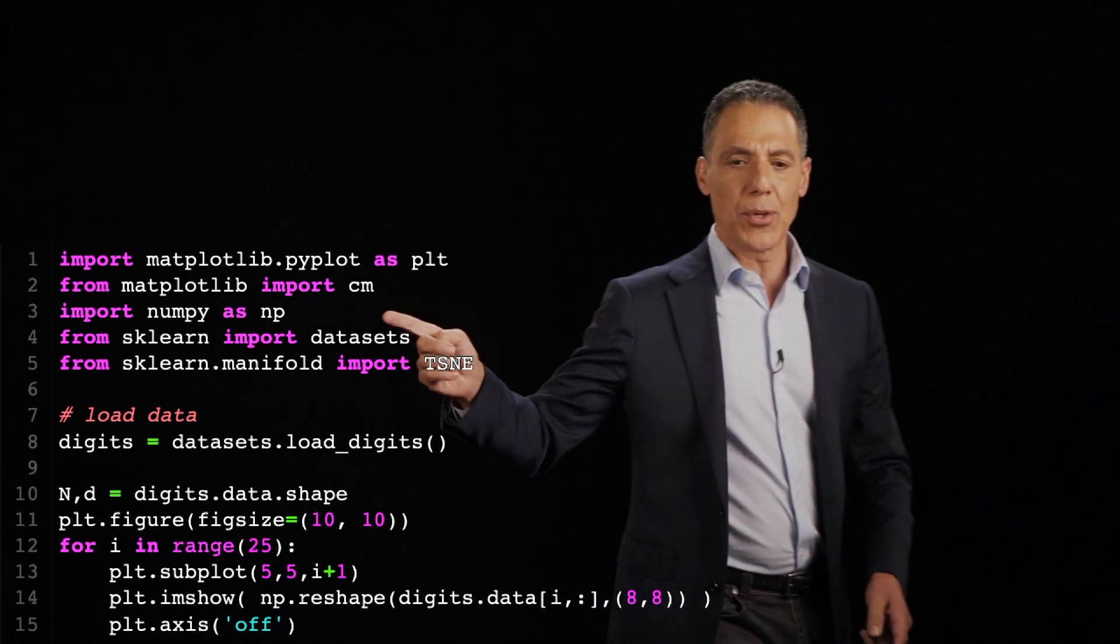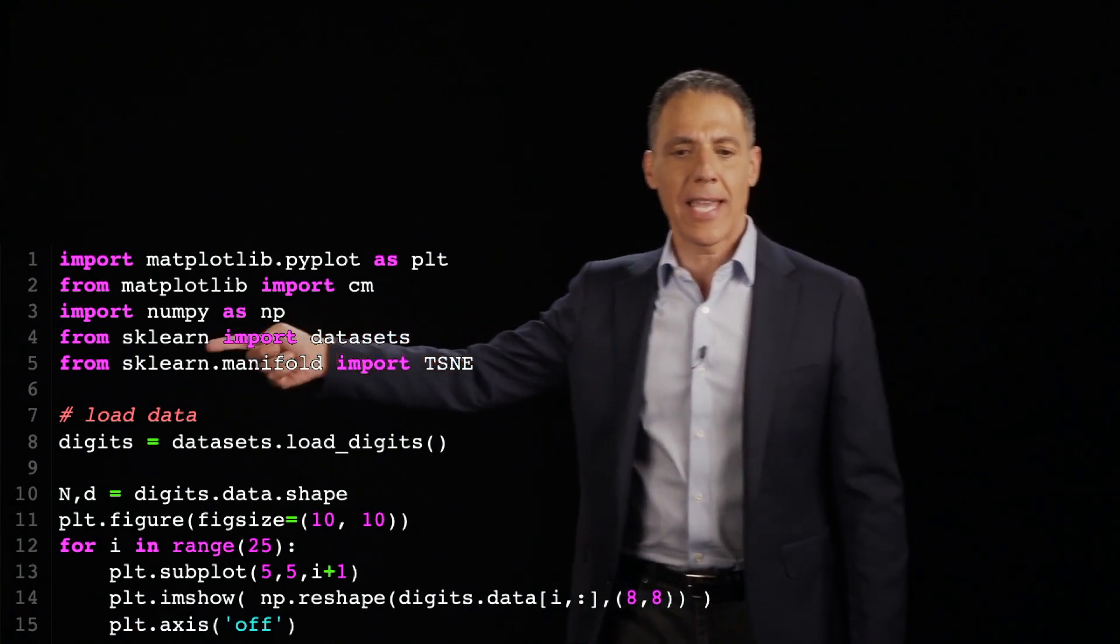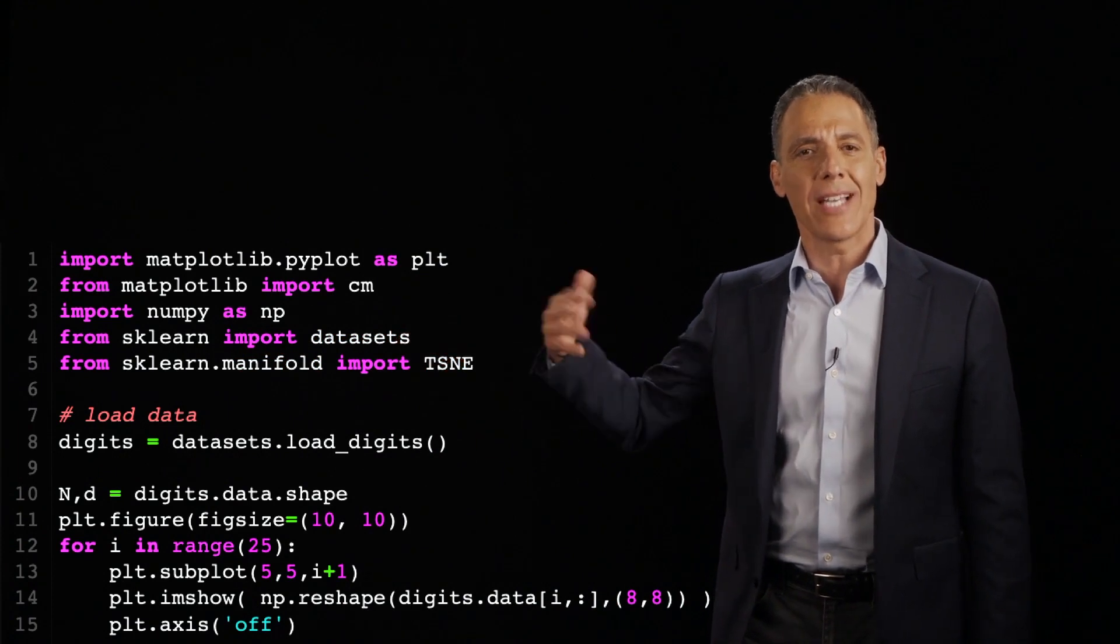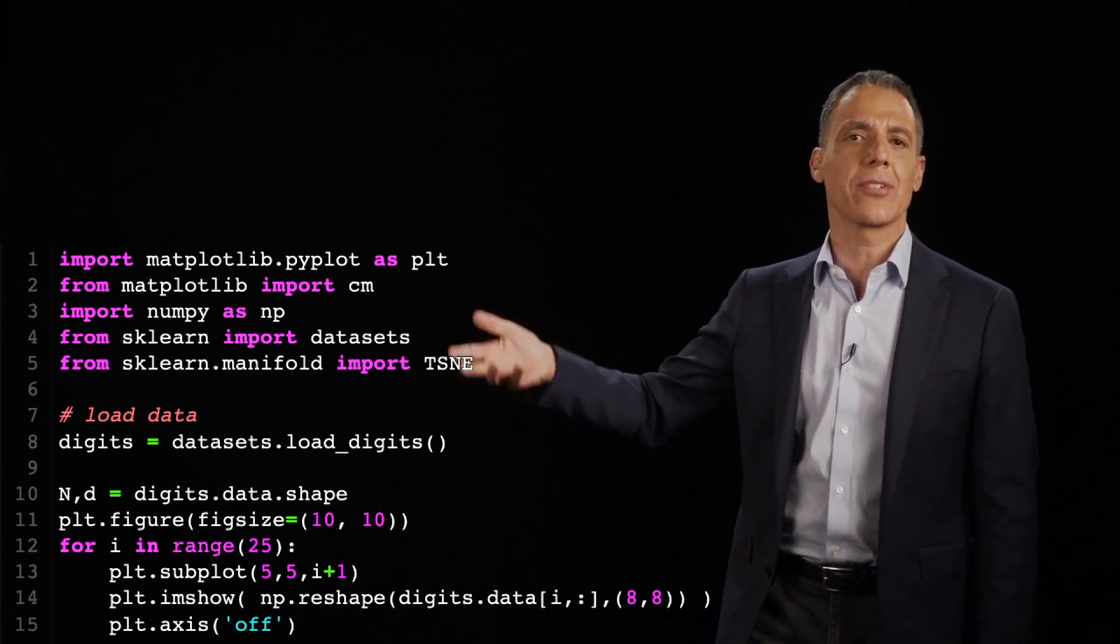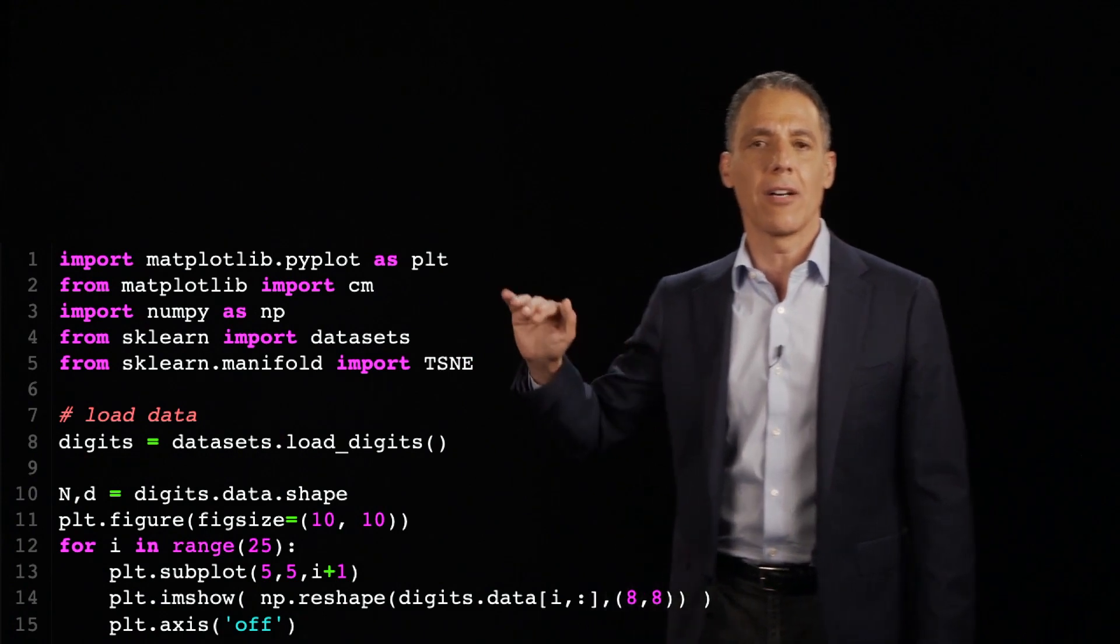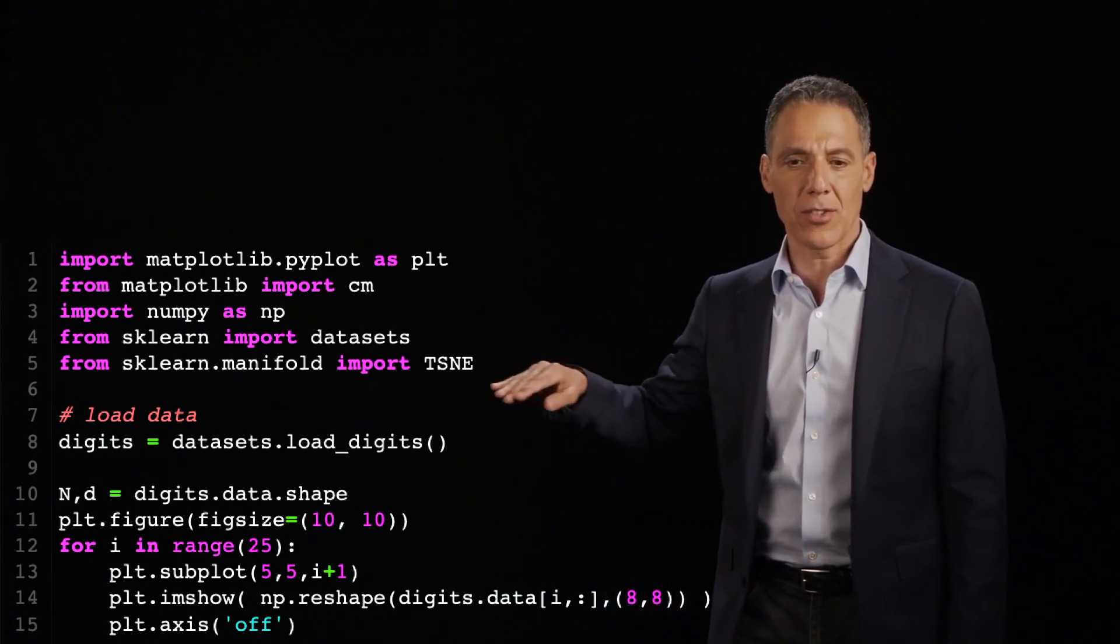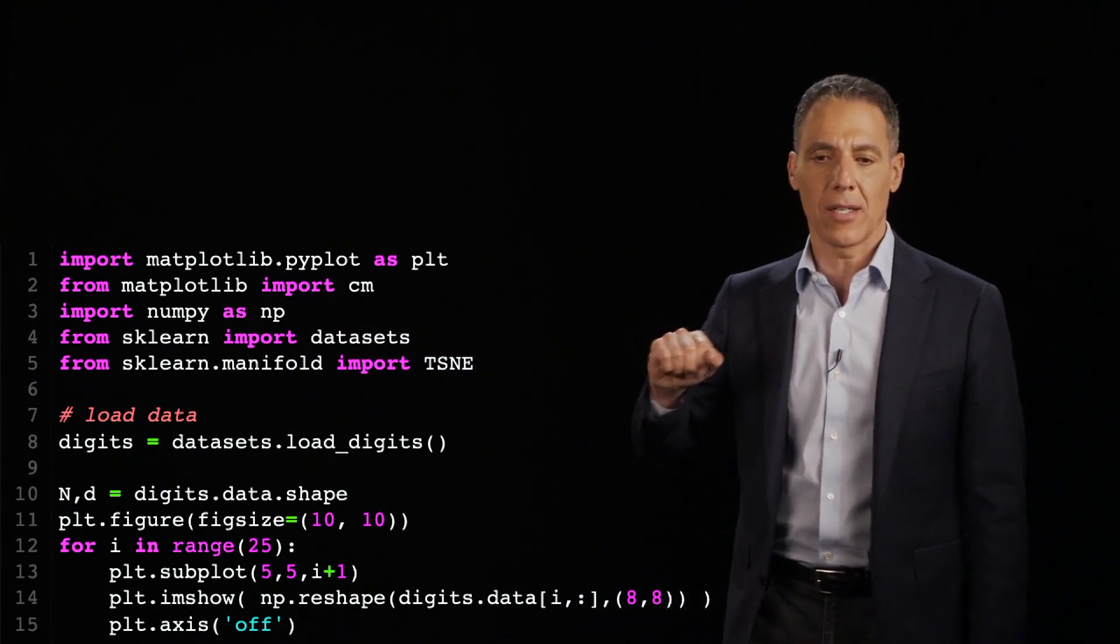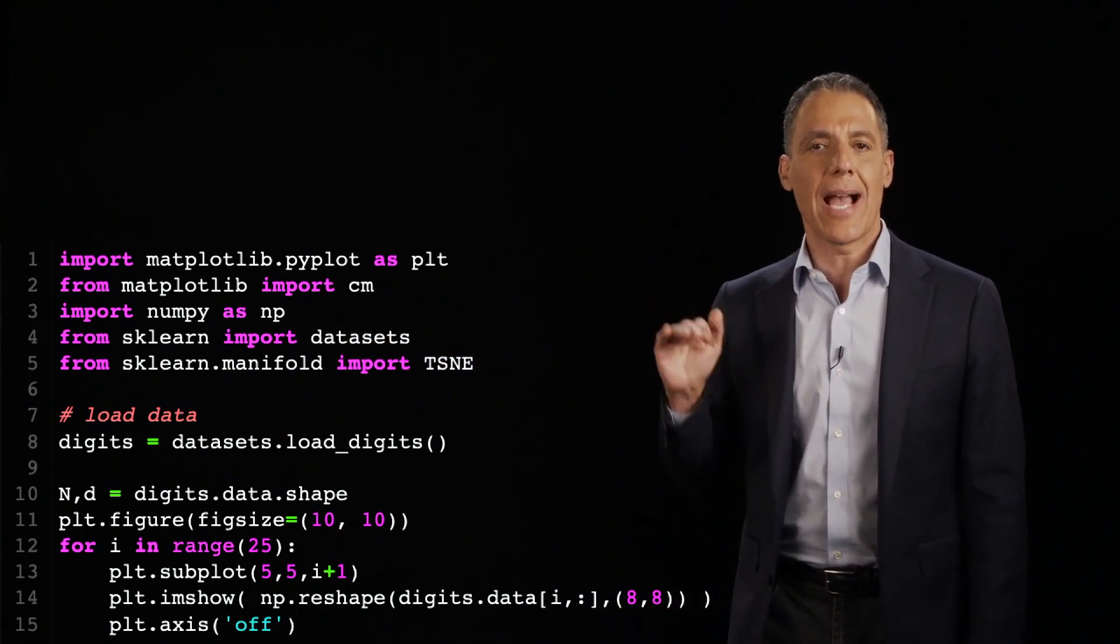Let's now implement TSNE and use it for visualizing some high-dimensional data. I'm going to bring in from sklearn a nice feature called Datasets, which has some sample datasets that you can use in various machine learning applications. And I'm going to bring in TSNE from the Manifold library. That's what's going to implement the actual optimization.